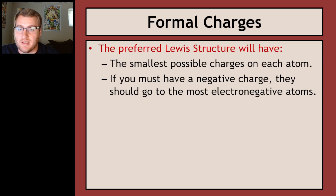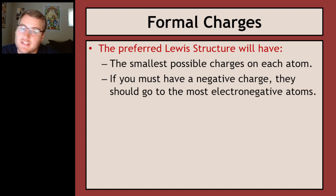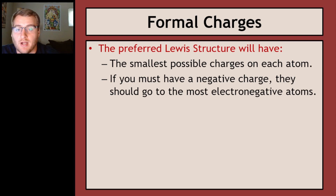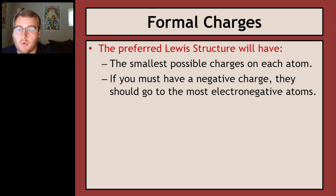The preferred Lewis structure will have first the smallest possible charges on each atom. Zero is the lowest, then negative one or positive one is next best. Negative or positive two or three is awful for stability — you definitely don't want that. The second rule is if you must have a negative charge, it should prefer to go on the more electronegative atom. The more electronegative something is, the more willing it is to take those electrons. So if you have a fluorine bonded to a carbon, the fluorine should have the negative charge if necessary.